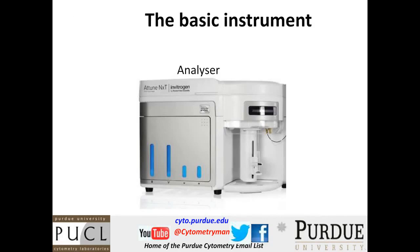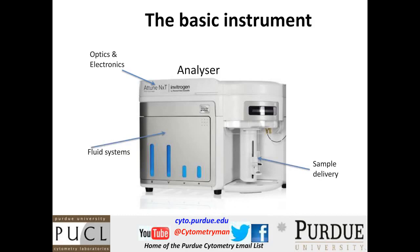The Attune is an analyzer that can measure up to 14 colors and two scatter parameters. It has the same general features as most instruments: a sample delivery component, a fluidic system, optics and electronics. And uniquely, it has the acoustic technology. So let's discuss the acoustic technology.